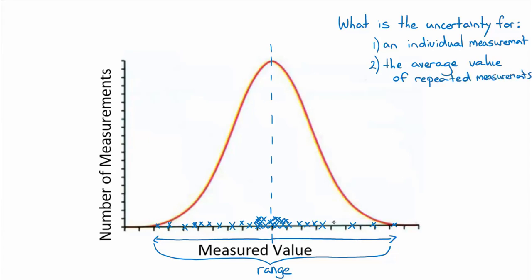Working out the uncertainty for an individual measurement is actually pretty straightforward. We just need to say, given any individual measurement that we take, how far from the average value is it likely to be? So if we took a measurement, we would know